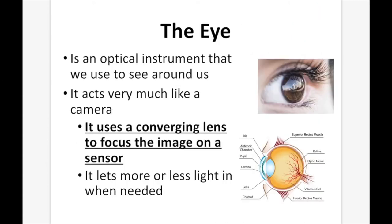The eye is an optical instrument that we use to see around us. It acts very much like a camera by using a converging lens to focus the image on a sensor. It also has the ability to control the amount of light that comes in, just like a camera.